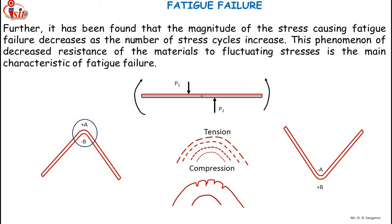Examples of parts subjected to fatigue failures include transmission shafts, connecting rods (which experience tensile and compressive stresses during suction and compression strokes), gears, vehicle suspension springs, and ball bearings. Many mechanical components are subjected to cyclic loads that change their magnitude with respect to time, making fatigue failure a time-delayed premature failure under cyclic loading.